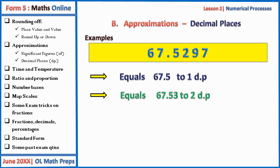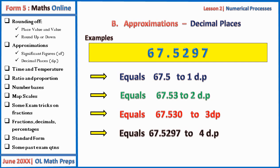To two decimal places we have 67.53 — not 67.52, because nine will affect the two. To three decimal places we have 67.530. The third decimal place is nine, but seven will affect it. Rounding up seven to one and adding to nine gives ten; we write zero and carry one, which adds to two giving three, so to three decimal places we have 67.530.